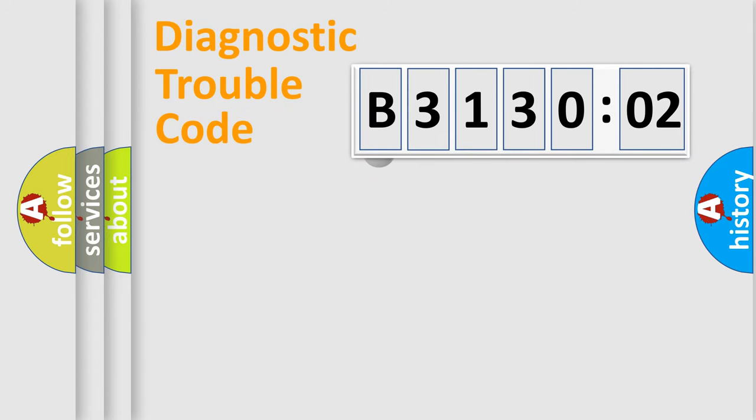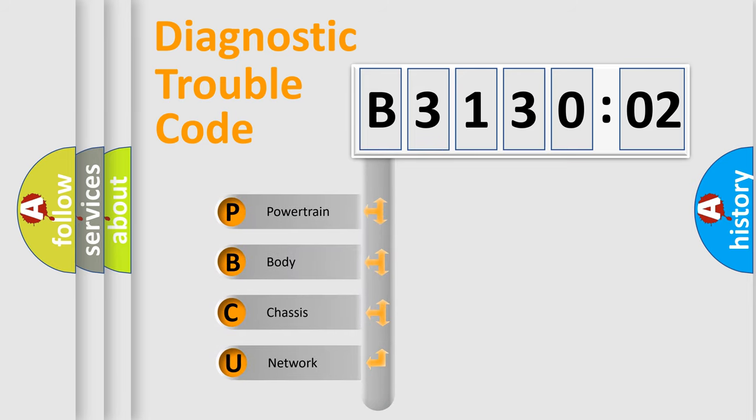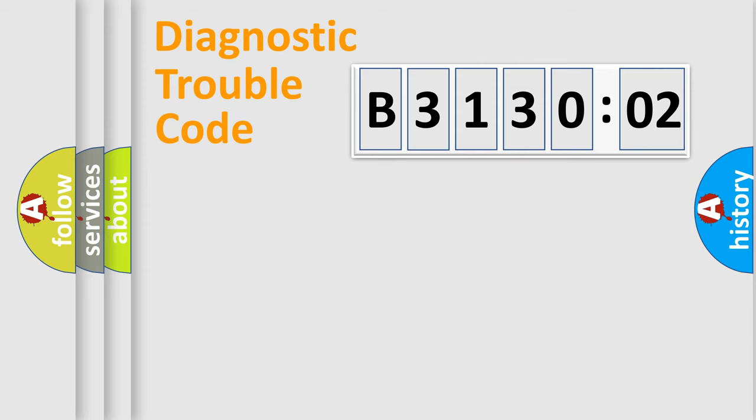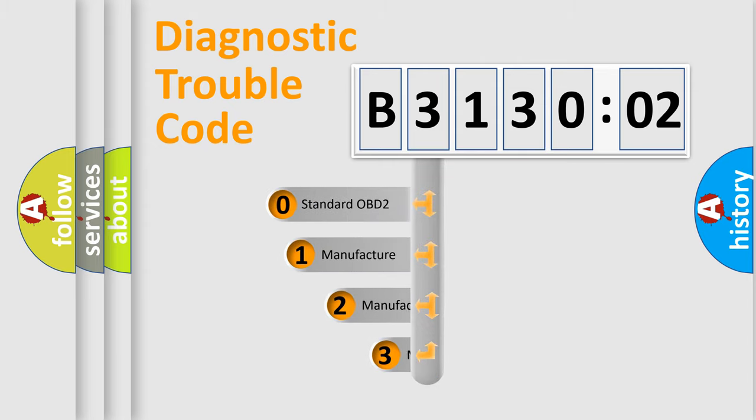First, let's look at the history of diagnostic fault code composition according to the OBD2 protocol, which is unified for all automakers since 2000. We divide the electric system of automobile into four basic units: Powertrain, Body, Chassis, Network. This distribution is defined in the first character code.